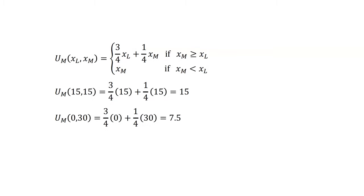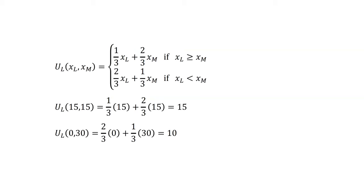If Linda chooses trust, Marco has a choice between $15 each and $30 for himself. Marco calculates the utility of each option. The utility to Marco of a distribution of 15 and 15 equals three-quarters times 15 plus one-quarter times 15, which equals 15. The utility to Marco of zero for Linda and 30 for himself is three-quarters times zero plus one-quarter times 30, which equals 7.5.